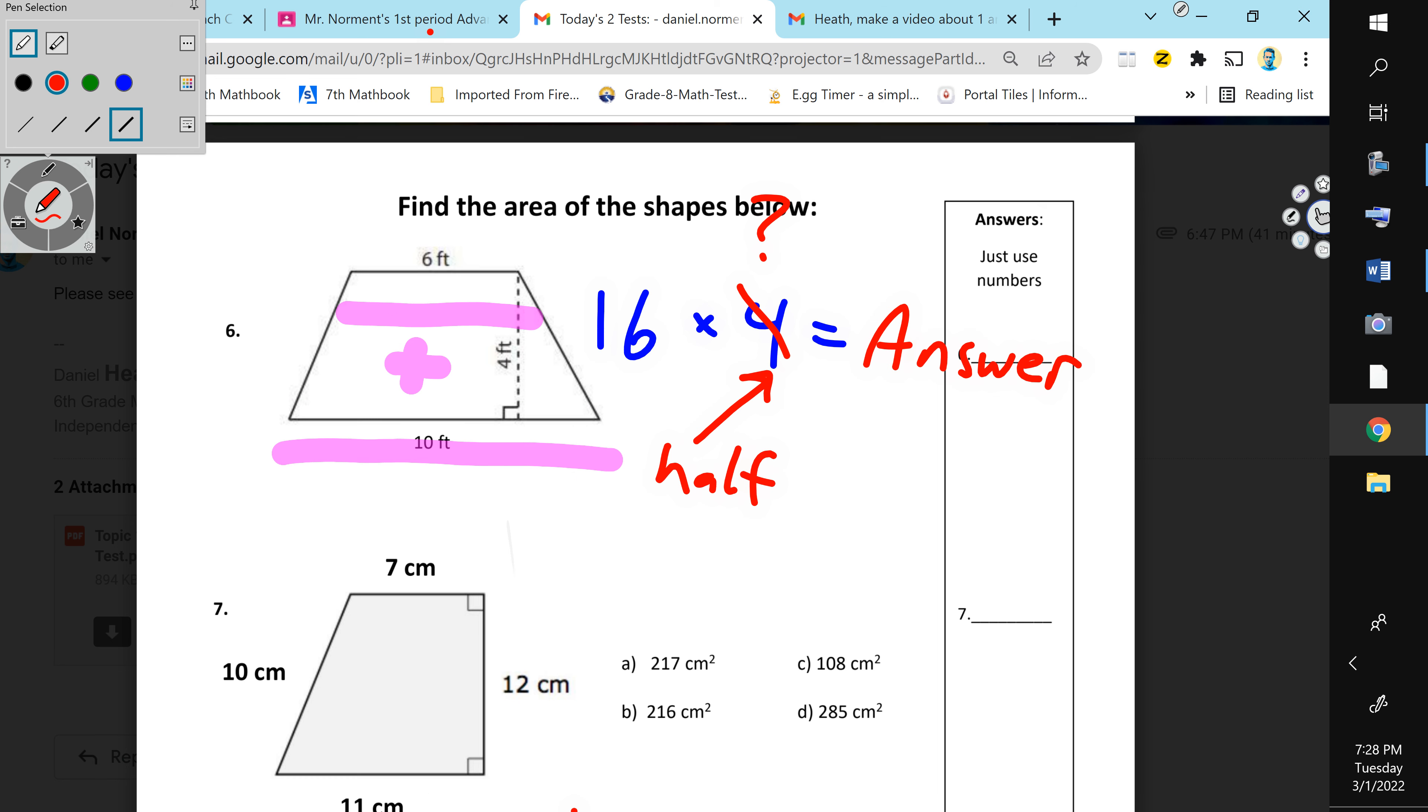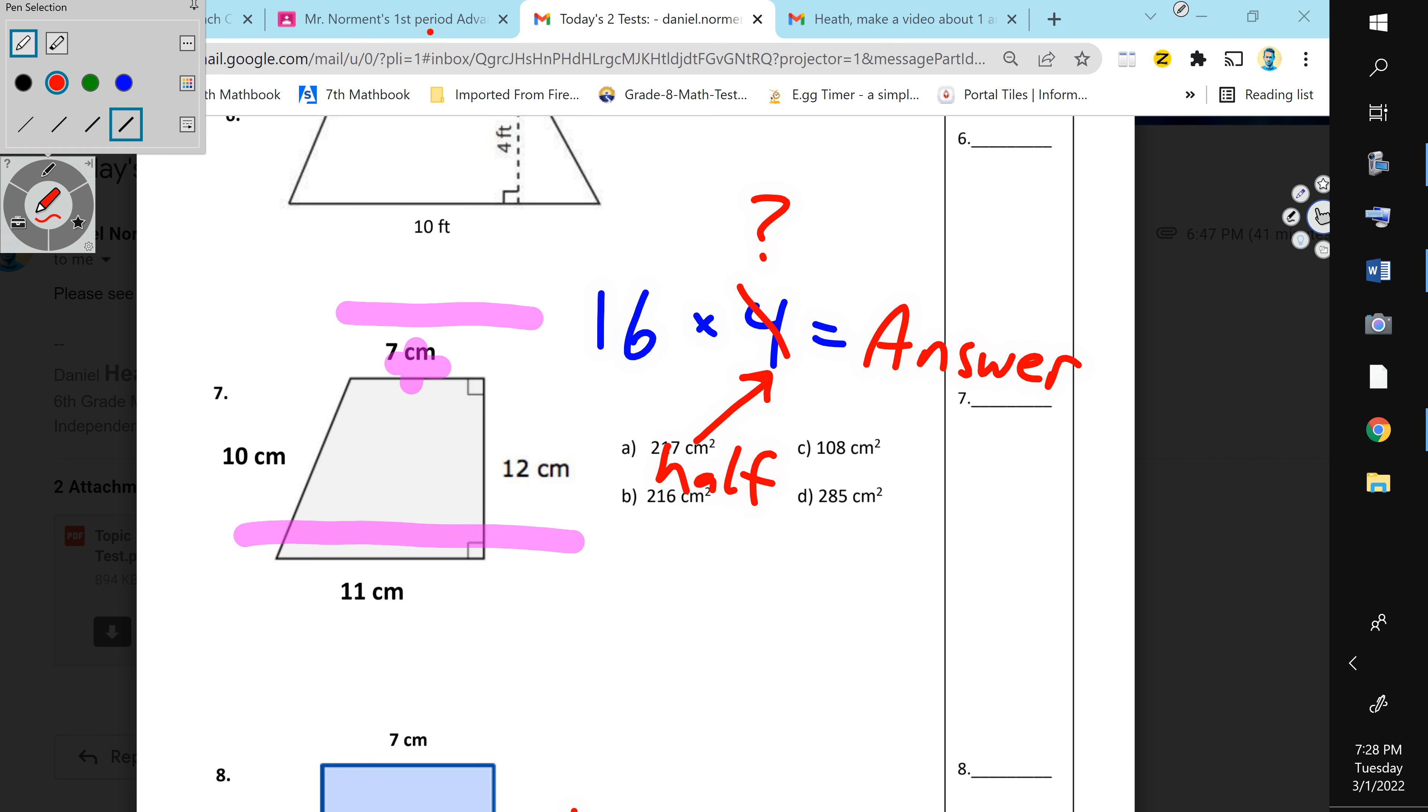And we can do the same thing with number seven. So, number seven, you're going to take, you're going to add top plus bottom times, now this is going to be your height.